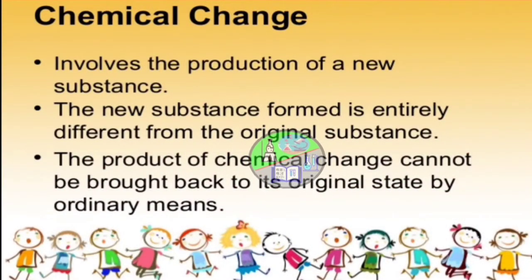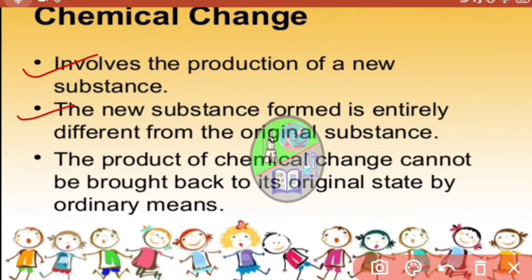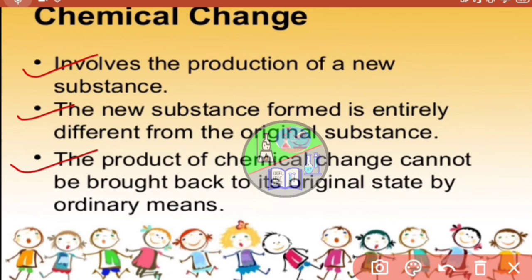Characteristics of chemical changes are: it involves the production of a new substance with new properties. The new substance formed is entirely different from the original substance taken initially. The product of chemical change cannot be brought back to its original state by ordinary means.